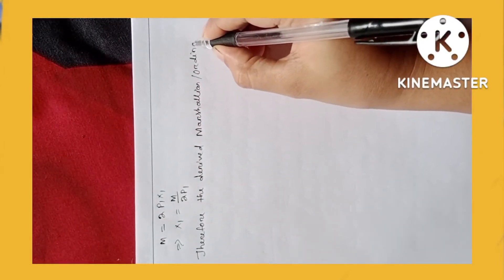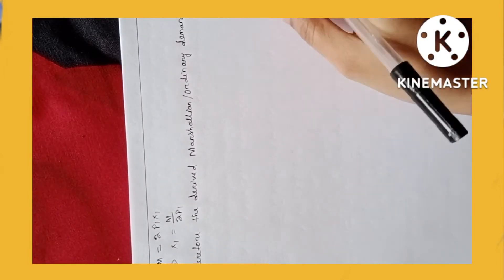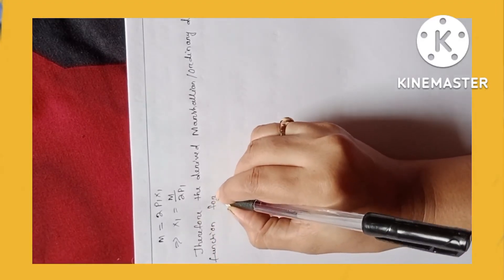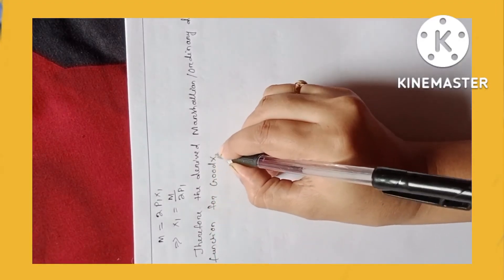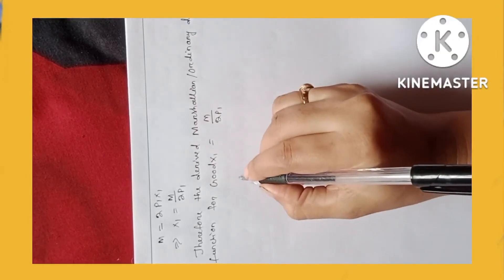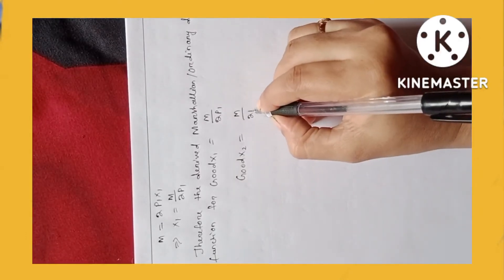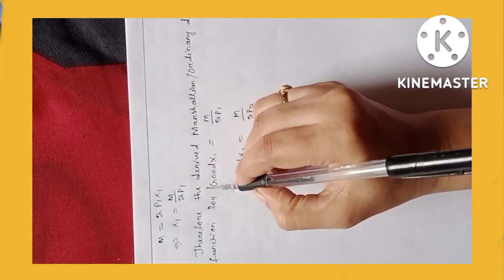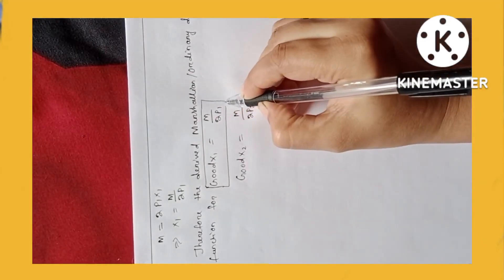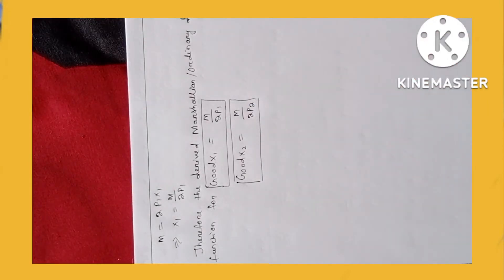Therefore the derived Marshallian, or ordinary, demand function for good x1 equals m/(2p1), and the demand function for good x2 equals m/(2p2). This is the Marshallian demand function for good x1 and good x2.